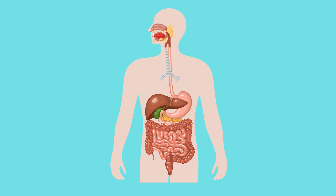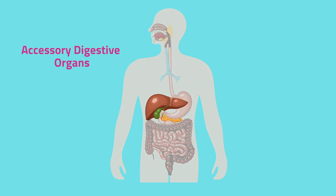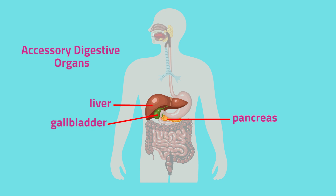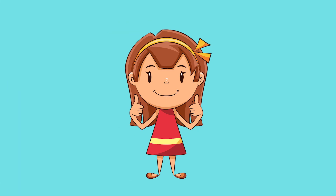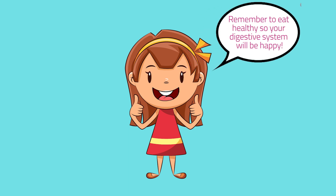Some organs are not found in the digestive tract, but they also aid in digestion. They are called accessory digestive organs. The liver is located near the stomach; it produces bile that helps in fat digestion. The gallbladder is a small sac attached under the liver; it stores the bile produced by the liver. The pancreas is an elongated organ behind the stomach; it secretes pancreatic juice and enzymes.